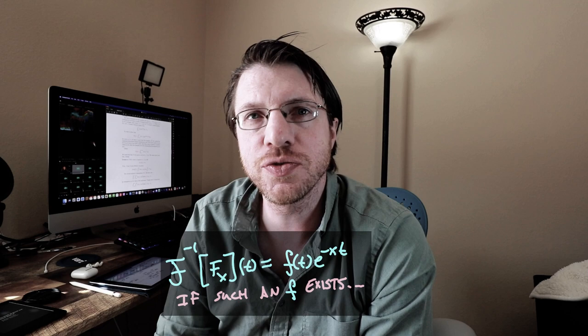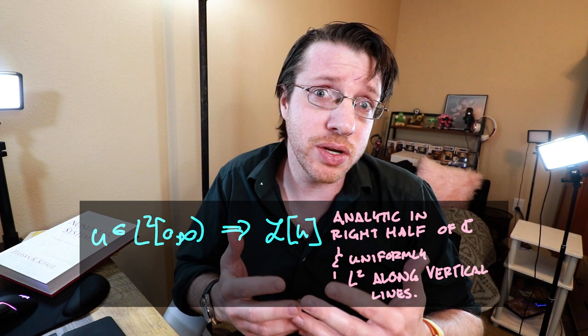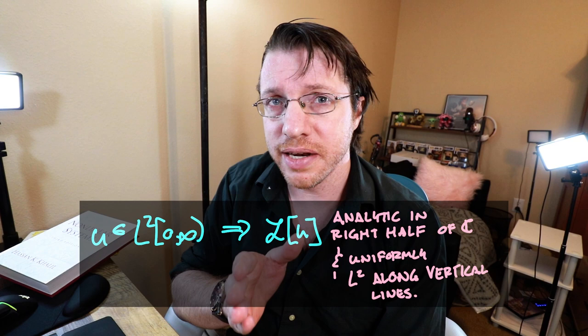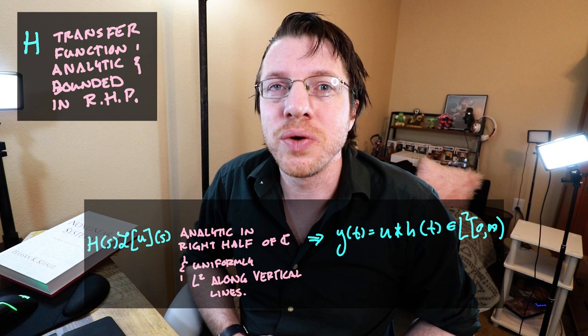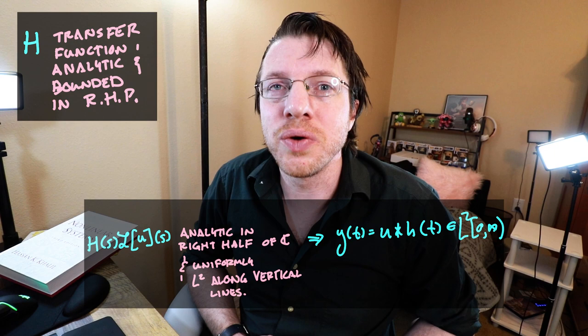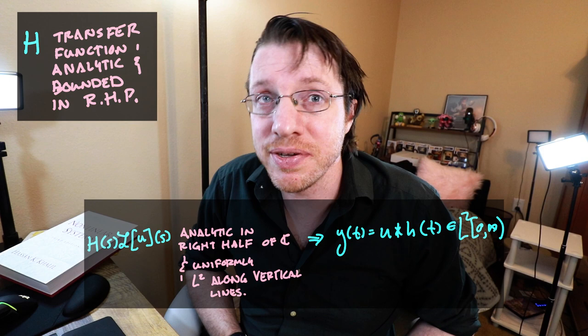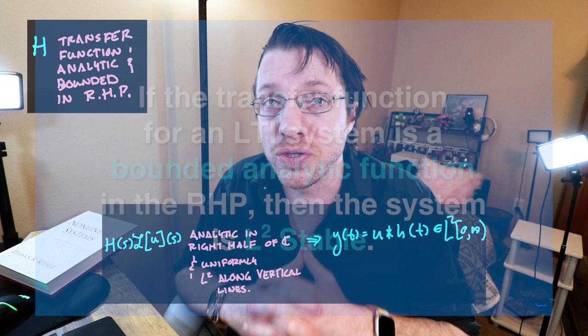Now what about L2 stability? For this, we can use the Paley-Wiener theorem. If we take an L2 signal as our input, then the Laplace transform of that input is going to be a function that is analytic in the right half of the complex plane and also satisfies certain L2 conditions along vertical lines there. If we take a bounded analytic function on the right half plane and multiply it by that Laplace transform, what we get is another Laplace transform that is analytic in the right half plane and satisfies those same L2 conditions — and that is the Laplace transform of our output. The Paley-Wiener theorem then tells us that output signal must itself be L2. So if our transfer function is a bounded analytic function on the right half of the complex plane, our system is L2 stable.